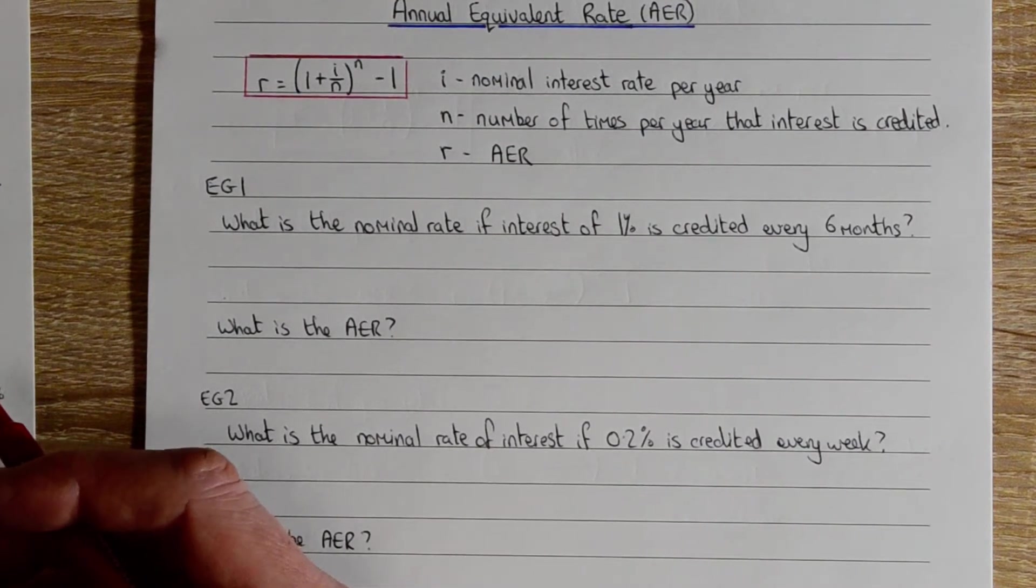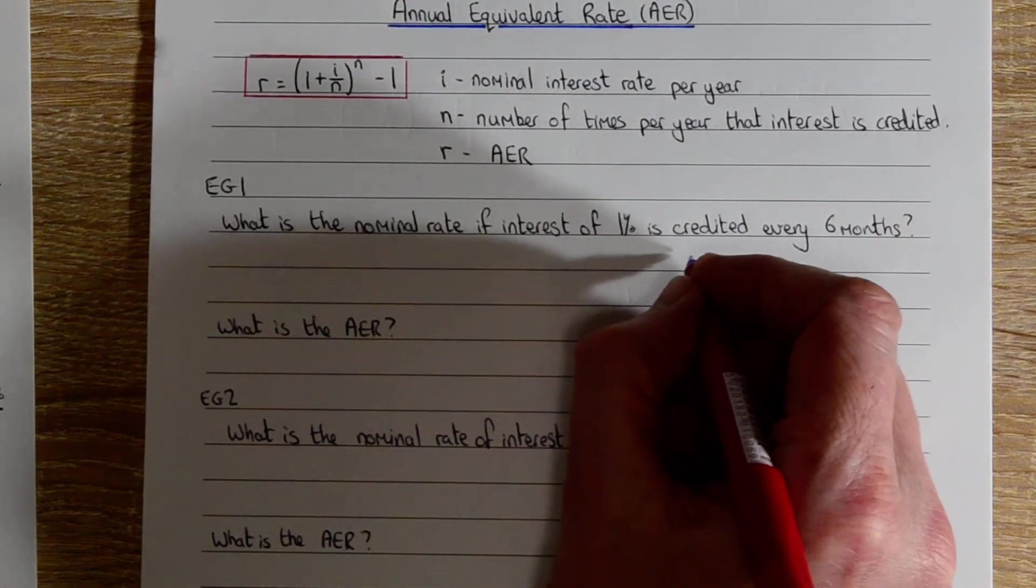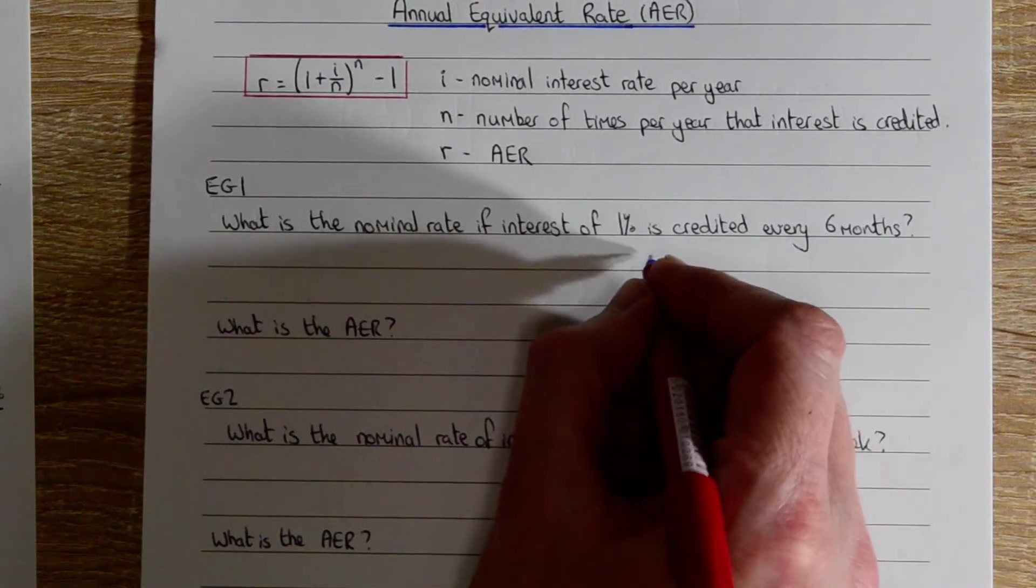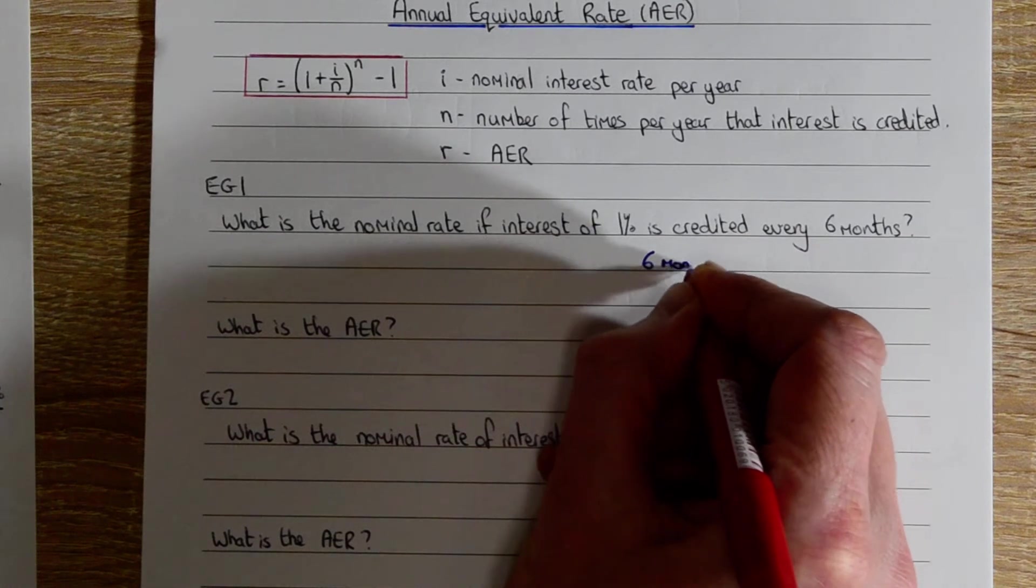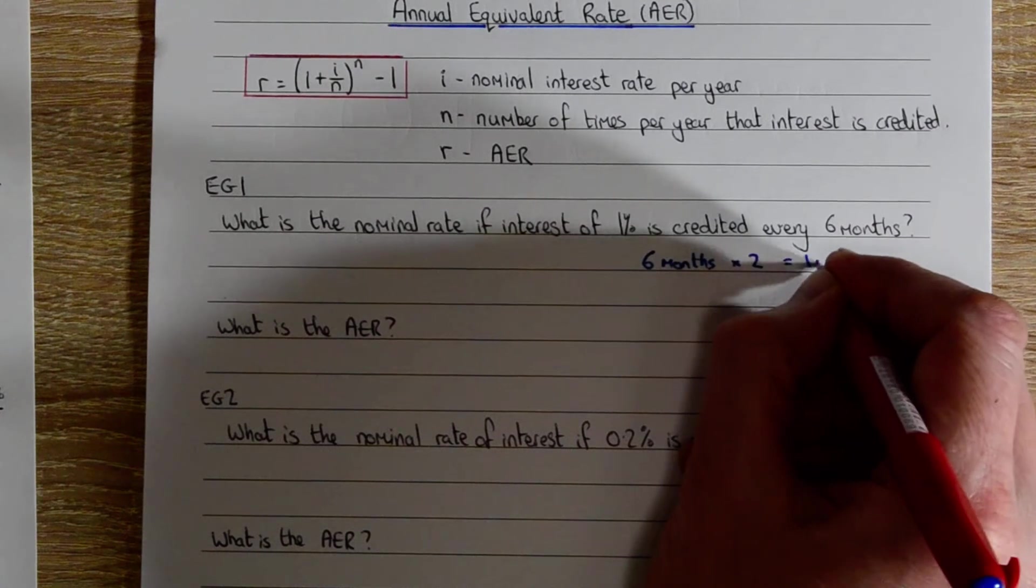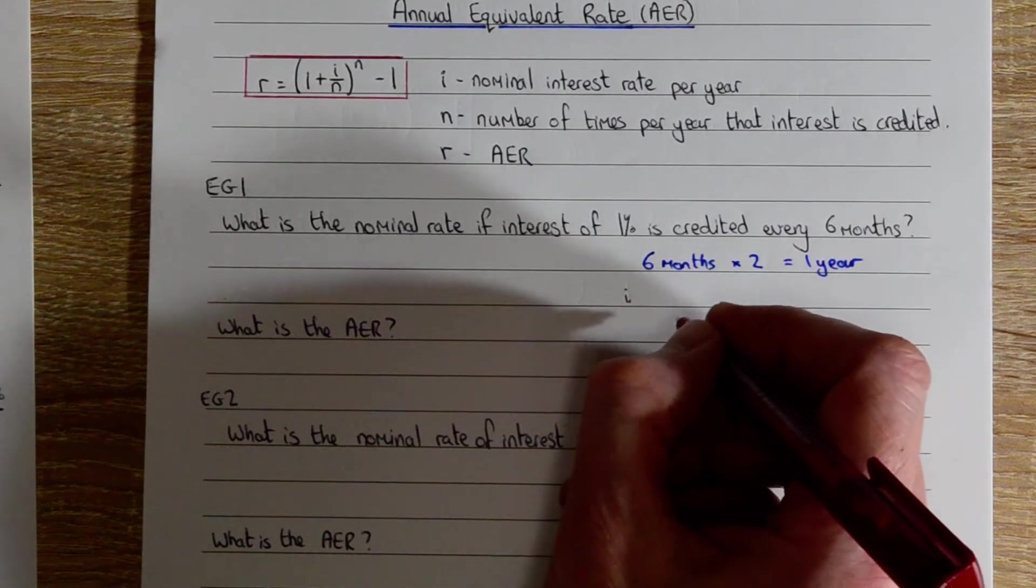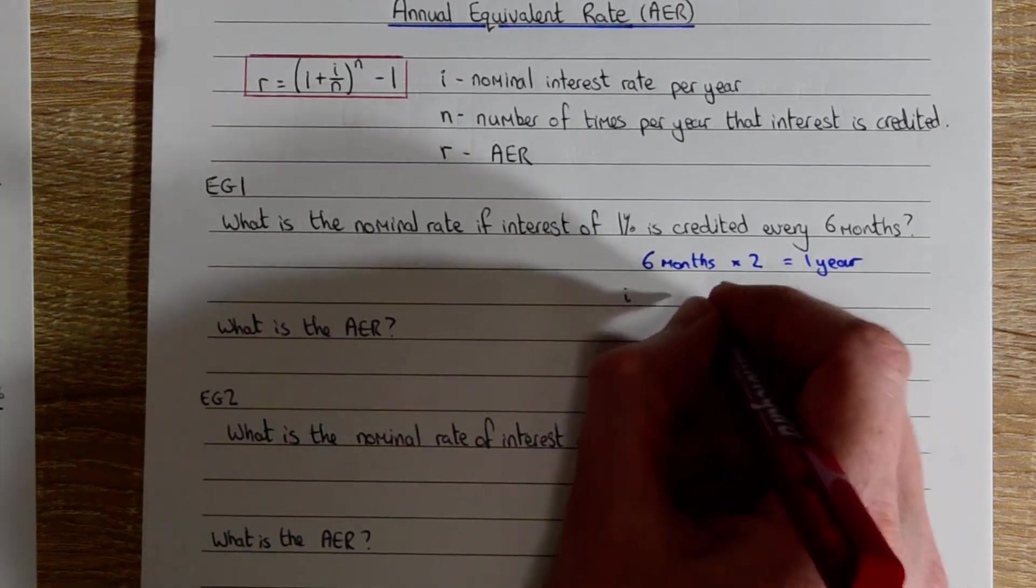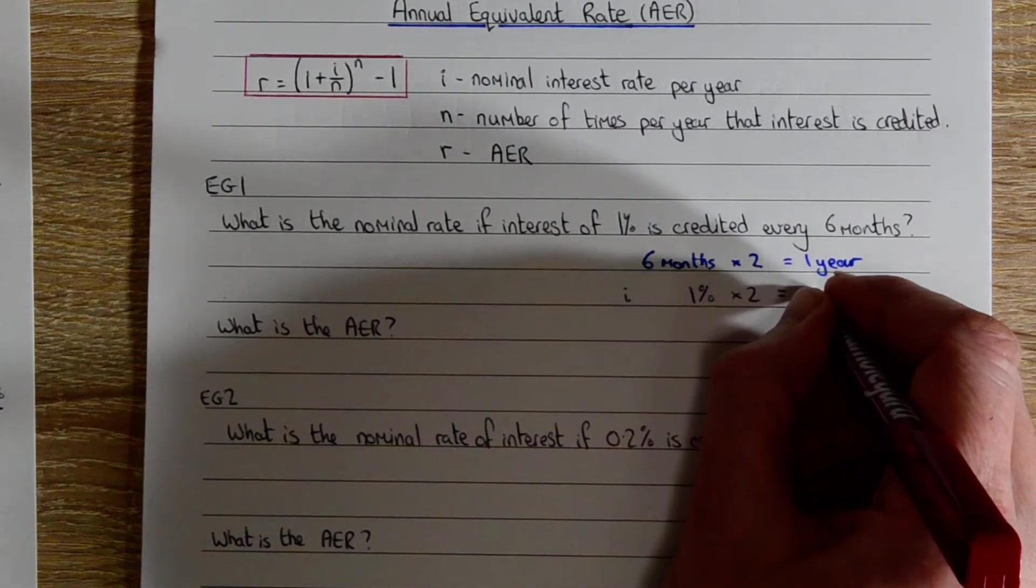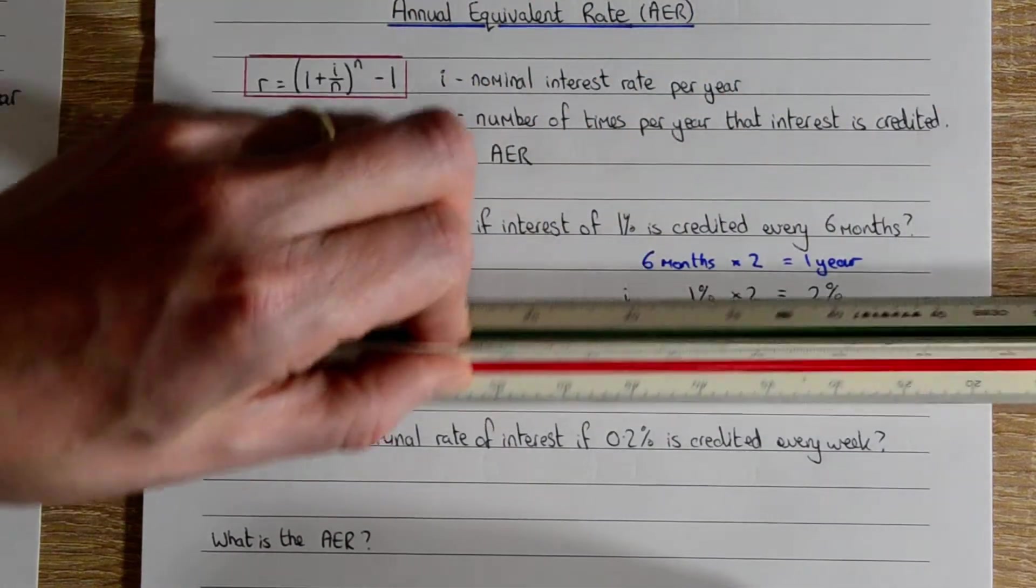To work out I, you need to start with saying how many times per year does this take place. So six months times by two makes one year, and so we do the same calculation applied to the interest that we're gaining every six months. We get 1% times by 2, so that is our nominal amount: 2%.